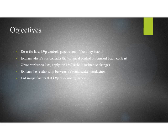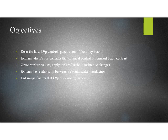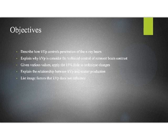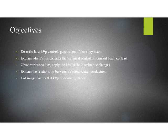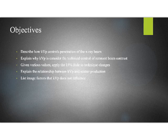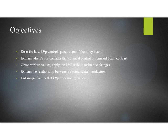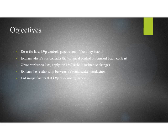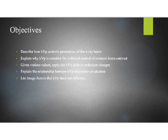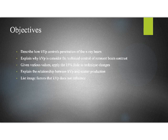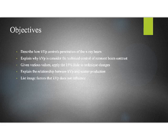We want to describe how KVP controls the penetration of the x-ray beam. It's going to be helpful if you've got some of the same metaphors that we used last week in talking about mass. We'll talk about why this is considered the technical factor for control of remnant beam contrast. Given various values, we're going to apply the 15% rule to technique changes. We'll explain relationships between KVP and scatter production, which is a limiting factor to endlessly increasing KVP, and also talk about image factors that KVP does not influence.